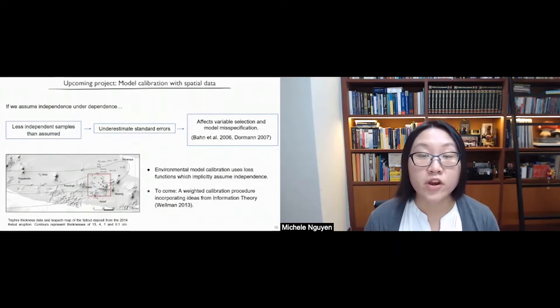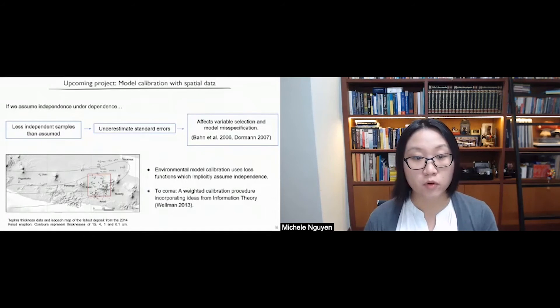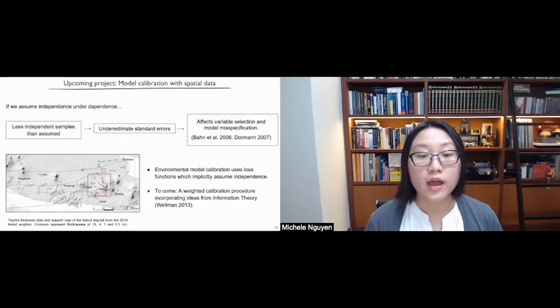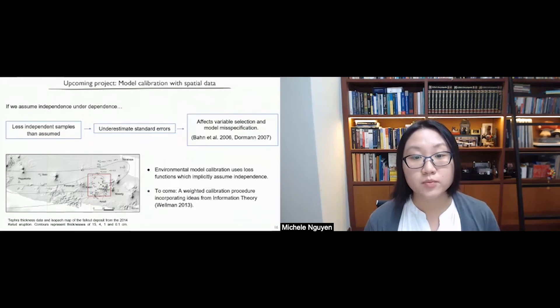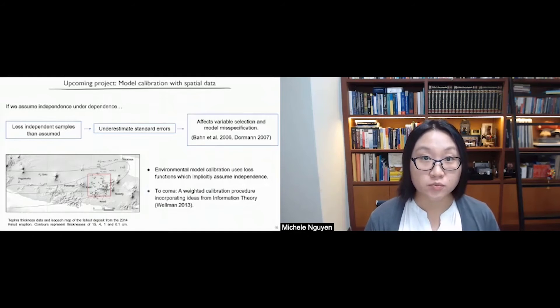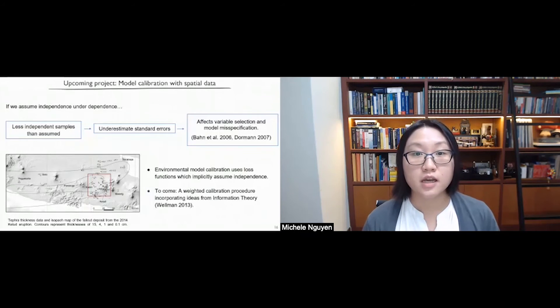Such an issue also arises in environmental model calibration where, for example, scientists might use spatial surveys like that shown in the map over here for volcano ash load to try to model the process of volcano ash dispersal. And one way that they do this is to optimize loss functions. But these loss functions often implicitly assume independence such as mean squared error. So one upcoming project I'm looking at is to develop a weighted calibration procedure to incorporate spatial correlation in model calibration. And this would incorporate ideas from information theory, such as spatial entropy, whereby the information contained in an observation is calculated as a function of its distance from its neighbors, as well as the spatial dependence present.